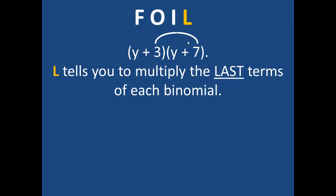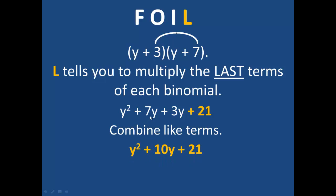And lastly, L stands for last. This would be the last term of each binomial. So I have 3 and 7. When multiplied, they give me 21. Now that I have multiplied all the terms in the first binomial by all the terms in the second binomial, I can combine like terms, which will give me y squared plus 10y plus 21.